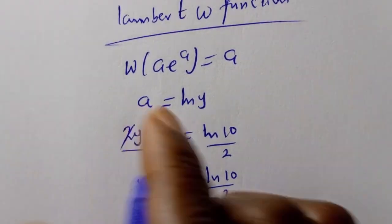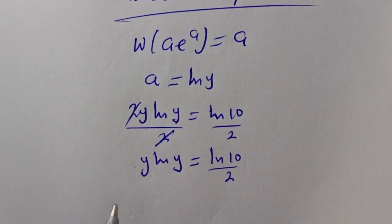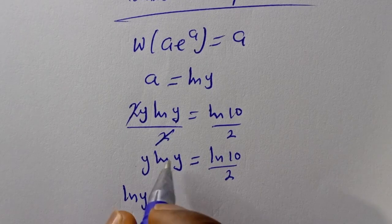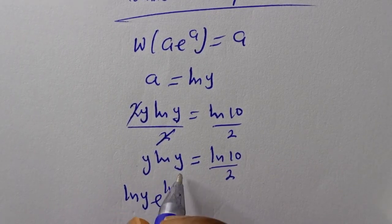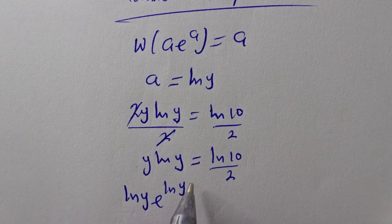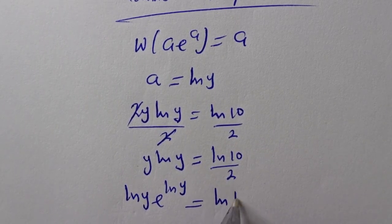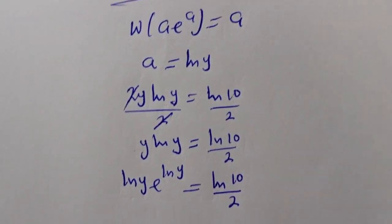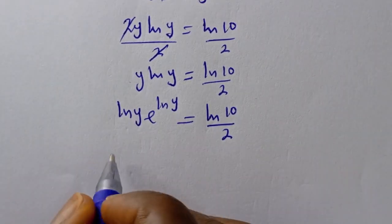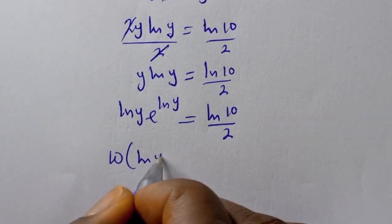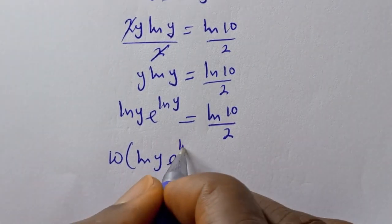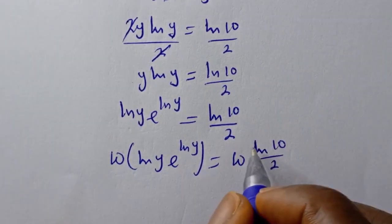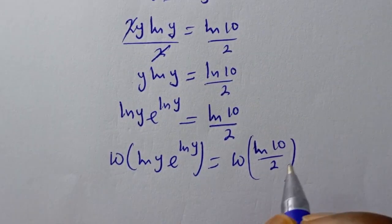So let's introduce the Lambert W function. We have natural log of y times e raised to the power of natural log of y, equal to natural log of 10 over 2. Applying W to both sides: ln(y) · e^(ln y) = W(ln(10)/2).